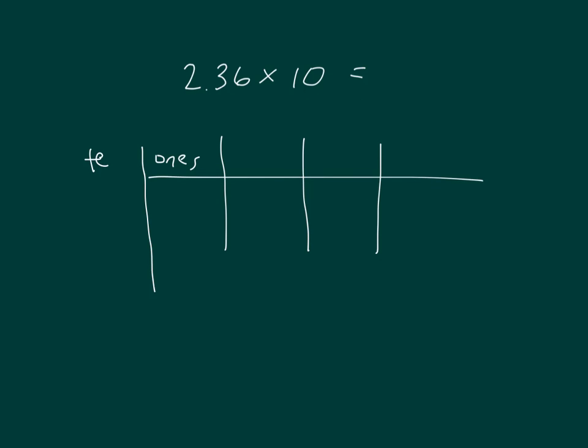We have tens. First let's place this into the place value chart. We have 2 ones, 3 tenths, 6 hundredths. When we multiply by 10, we multiply a 10, a 1 by 10, you get tens. So you'd have 2 tens.